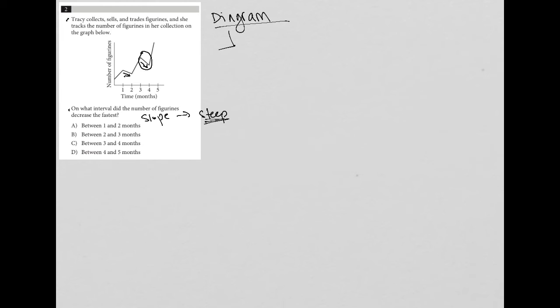That is steeper. It goes down faster than this line here between month one and two. So the answer, therefore, is choice C between three and four months.